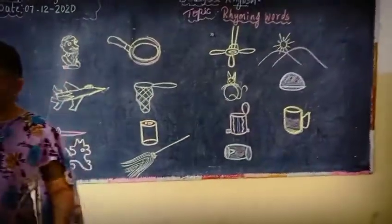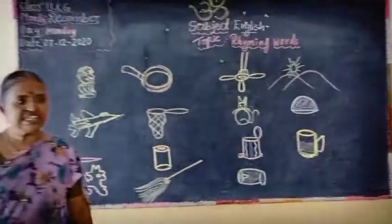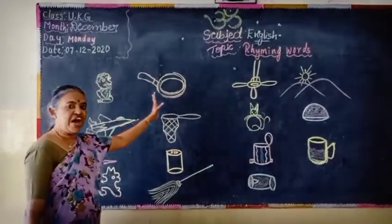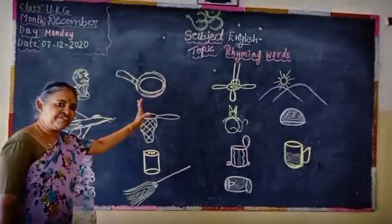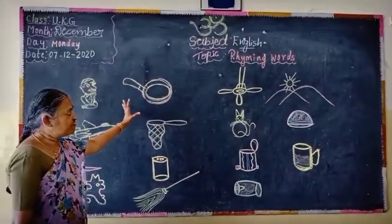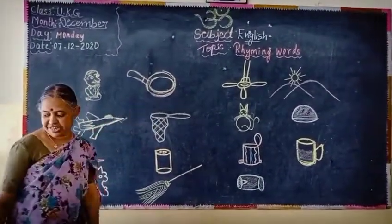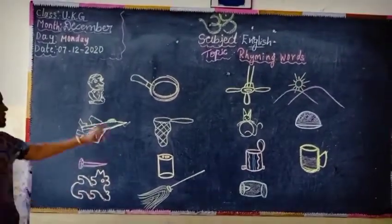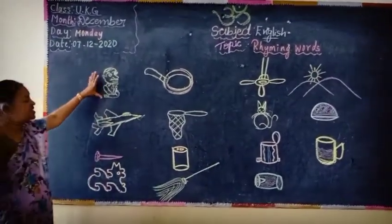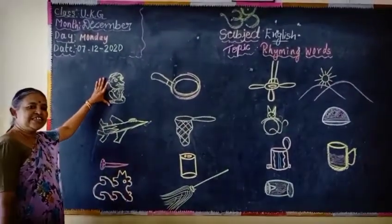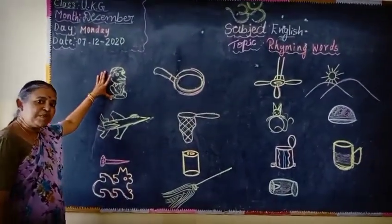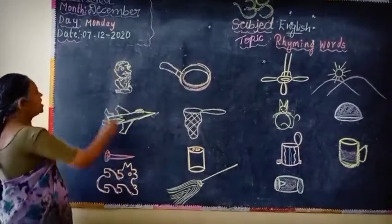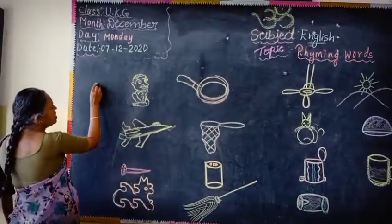Now we can see the blackboard. I have done some pictures. You have to identify the words, children. See the picture, children? This is man. What is the spelling of man, children? M-A-N.